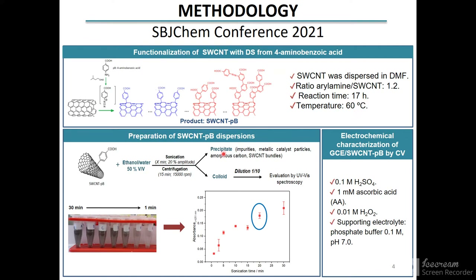Modified carbon nanotube colloidal dispersions were prepared in ethanol-water, applying ultrasonic treatment for a desired time, followed by ultracentrifugation to separate bundles, amorphous carbon, and other impurities. The optimal conditions to obtain the nanotube dispersion were selected by analyzing the absorbance of the nanotubes at 254 nanometers.